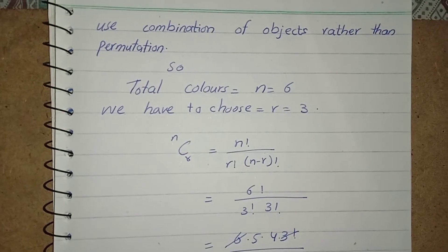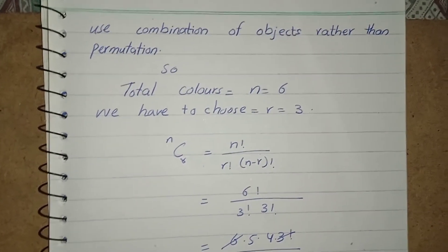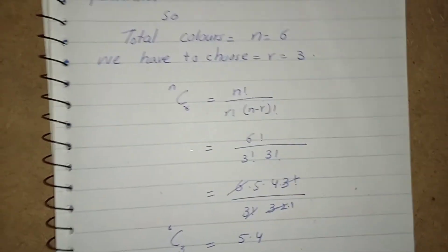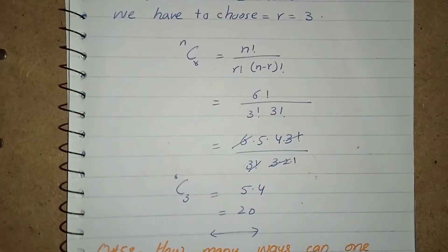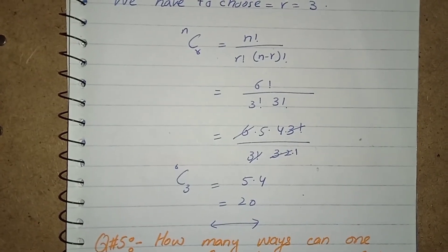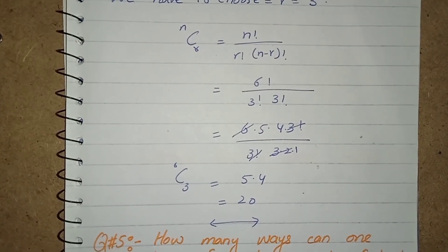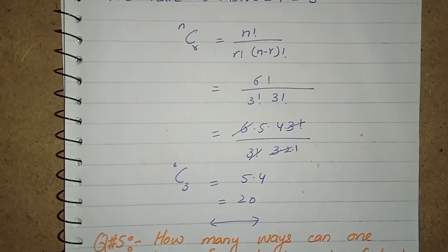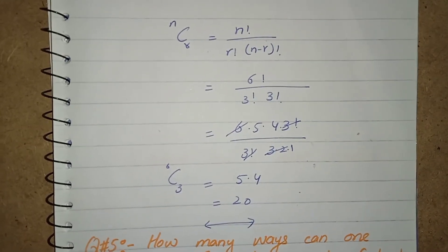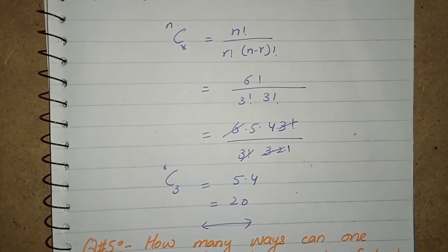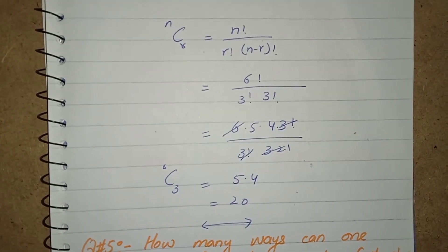So we will go with the combination. As the total colors are 6 and we have to choose 3 of them, so the value of n is 6 and the value of r is 3. By using the combination formula, I get the number of ways with which you can arrange 3 colors from 6 of them without bothering any specific combination of colors.